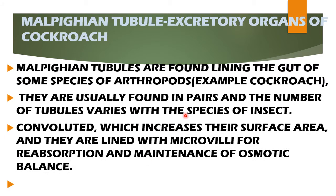Malpighian tubules are found lining the gut of some species of arthropods, for example the cockroach. They are usually found in pairs and the number of tubules varies with the species of insect. They are convoluted, which increases their surface area, and they are lined with microvilli for reabsorption and maintenance of osmotic balance.